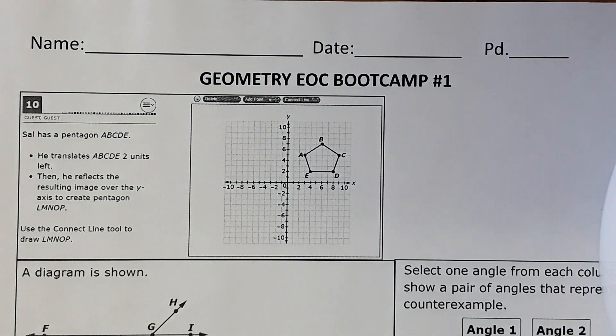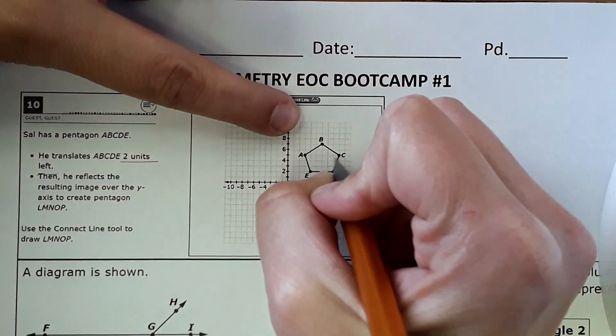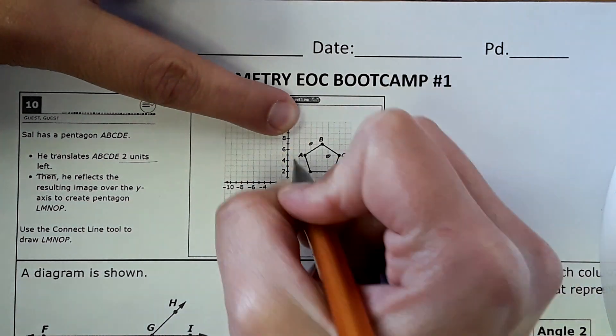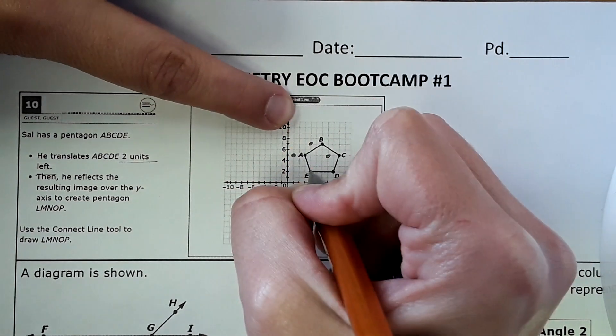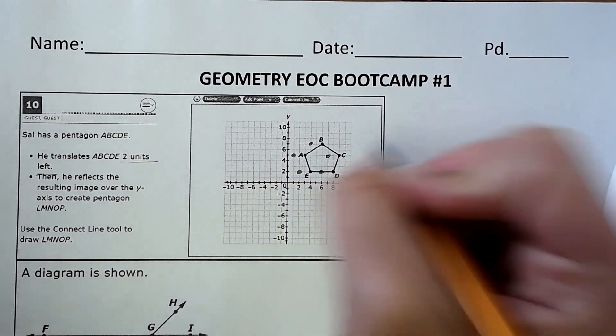First points that you need to add - it says to translate it two units to the left, so you would translate each point two units to the left. That would translate the whole shape two units to the left, but remember you think about it in just individual points and it makes it a little bit easier.